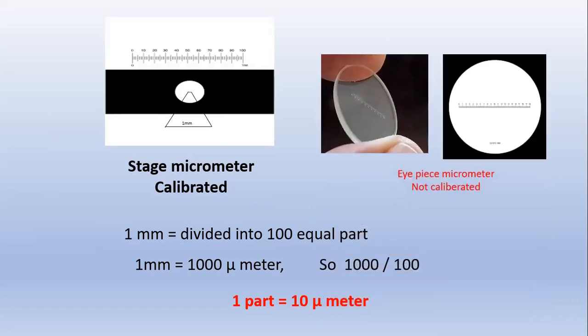Now, the eyepiece micrometer — because a circular coverslip is there, and on this coverslip there is a scale. This coverslip is to be placed in the eyepiece of the microscope, so it is called the eyepiece micrometer, and it is used to determine or check the particle size of microscopic particles.